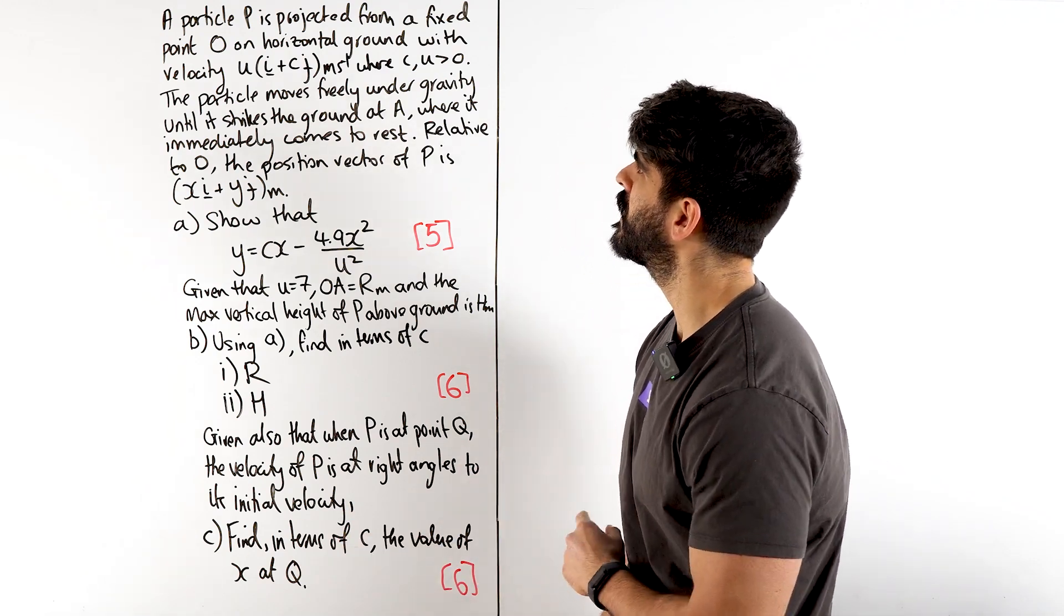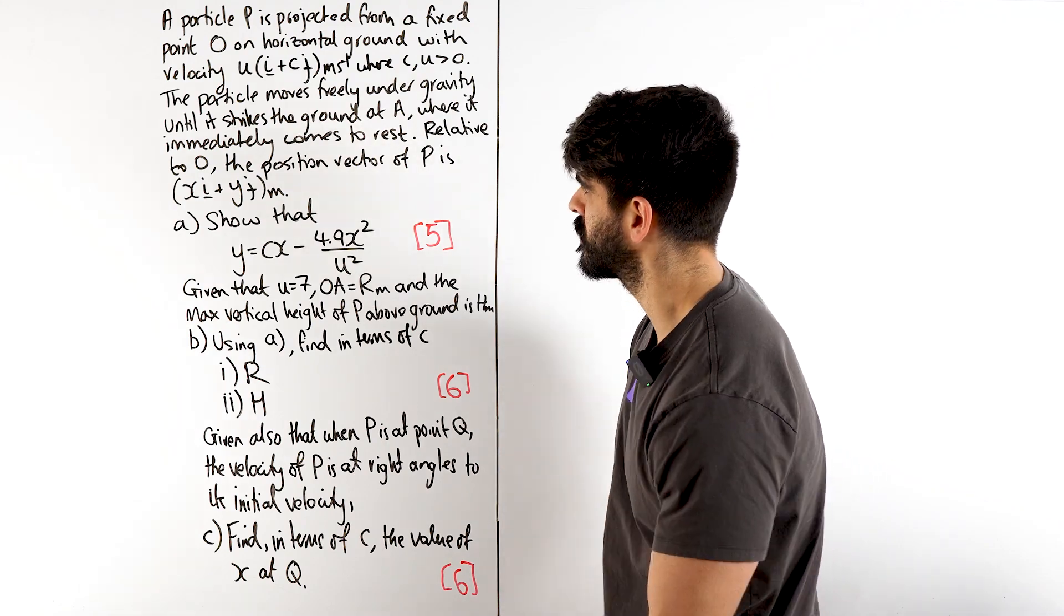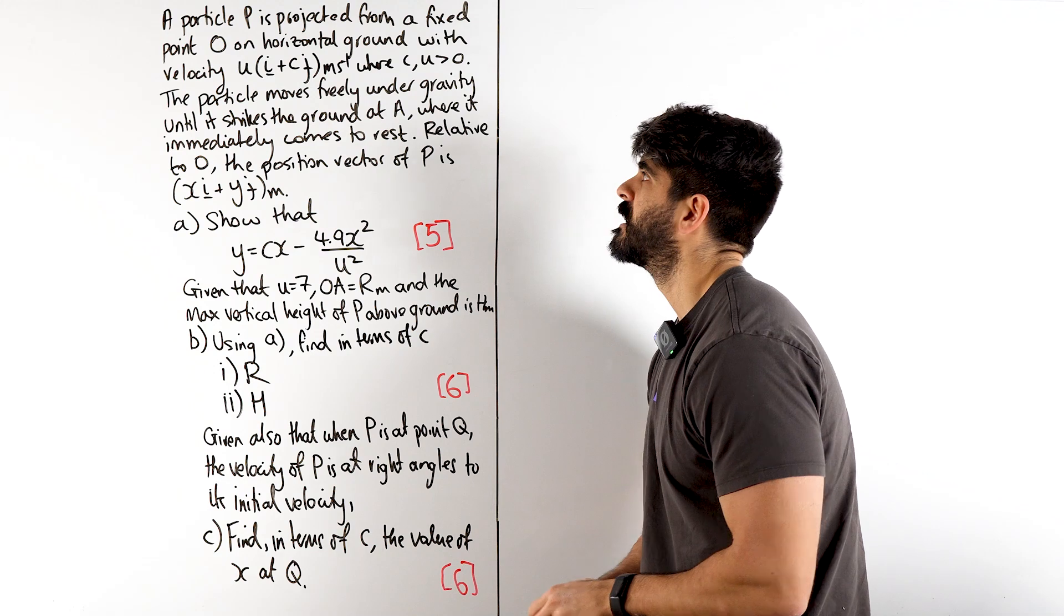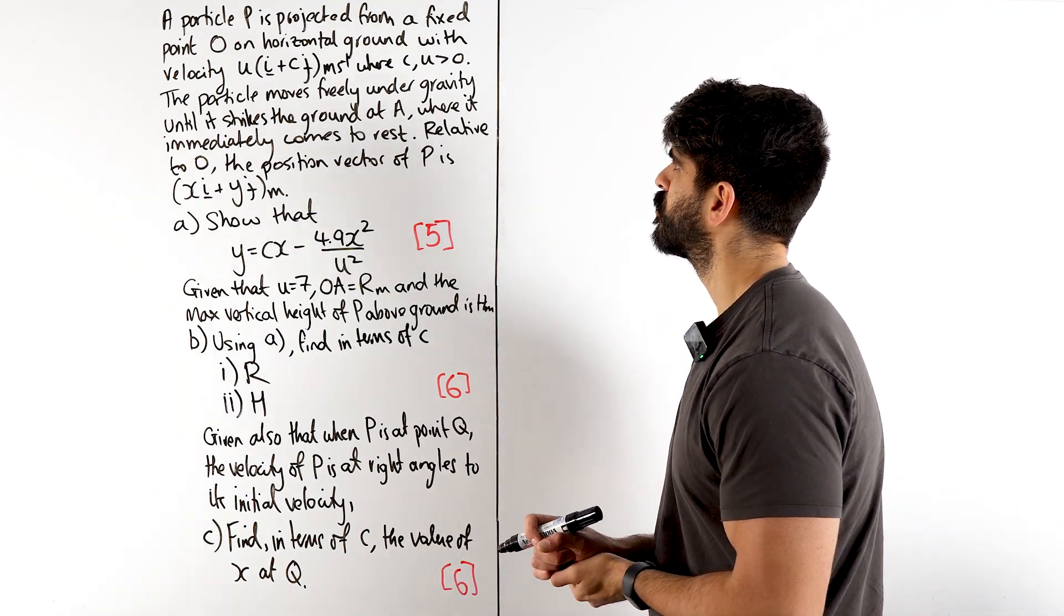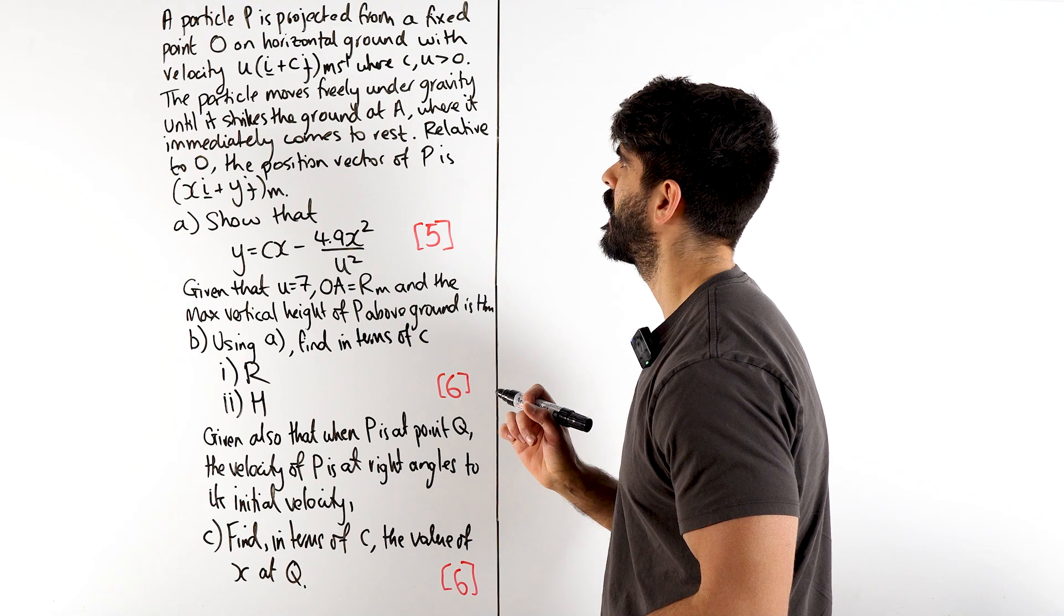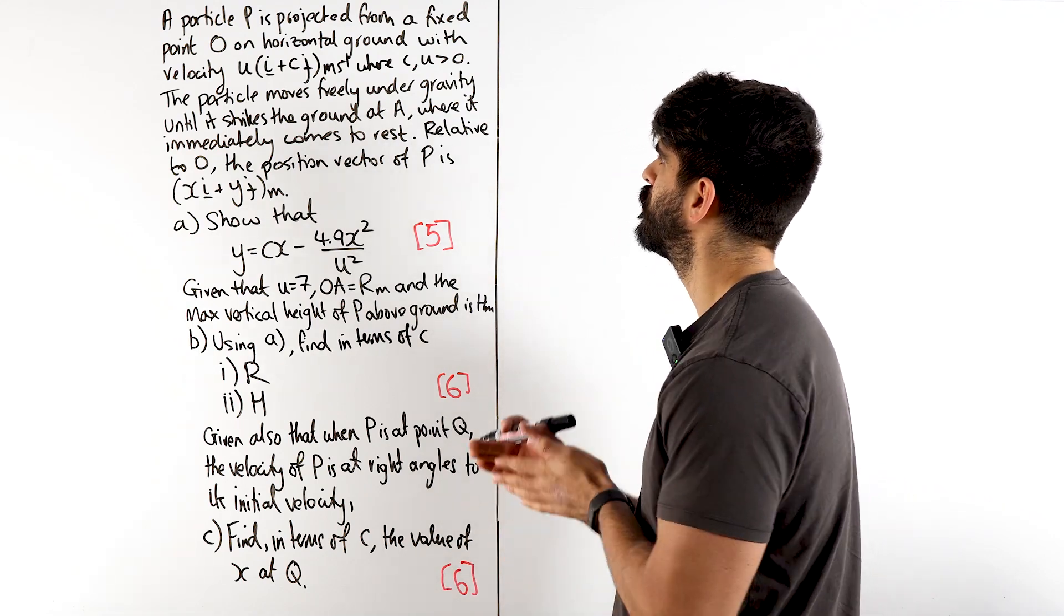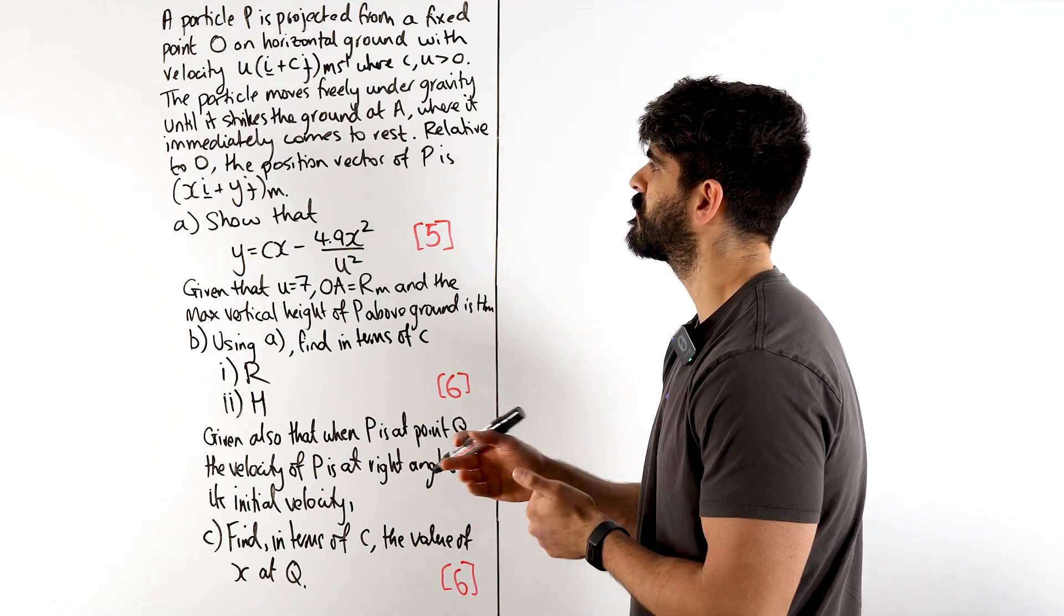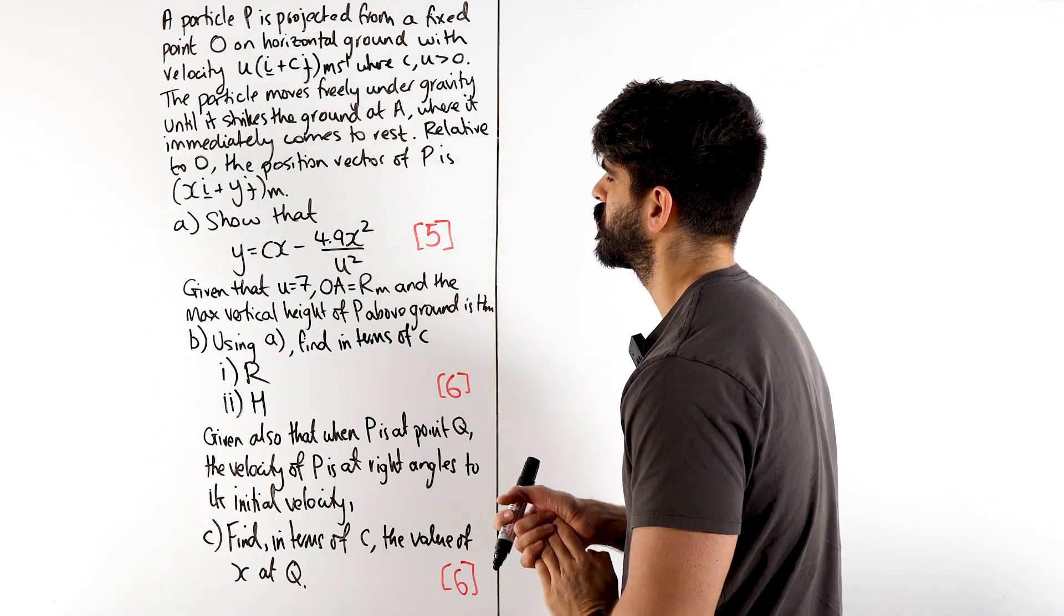So, a particle P is projected - and if you haven't seen the previous video, by the way, go and watch it because that is the craziest mechanics question they could ask in A-level maths. A particle P is projected from a fixed point O on horizontal ground with velocity U(i + Cj) meters per second, where C and U are positive. The particle moves free under gravity until it strikes the ground at A, where it immediately comes to rest. Relative to O, the position vector of P is XY. Show that this is true.